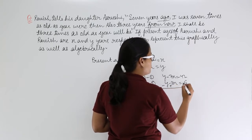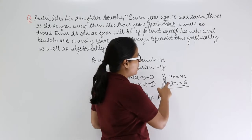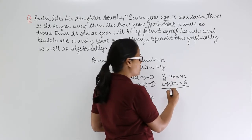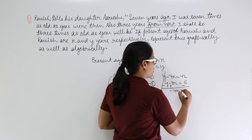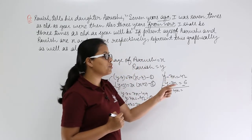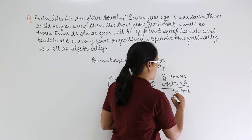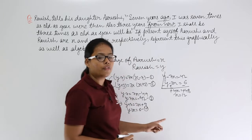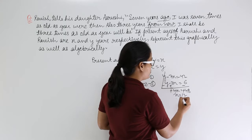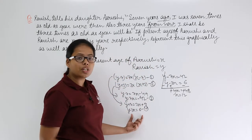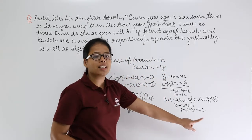Now let's find the intersecting point. Subtracting equation four from equation three: y and y cancel out, leaving minus seven x plus three x equals minus forty-two minus six. That gives minus four x equals minus forty-eight, so x equals twelve. Putting x equals twelve into equation four: y minus three(12) equals six, so y equals forty-two. The solution is x equals twelve and y equals forty-two.